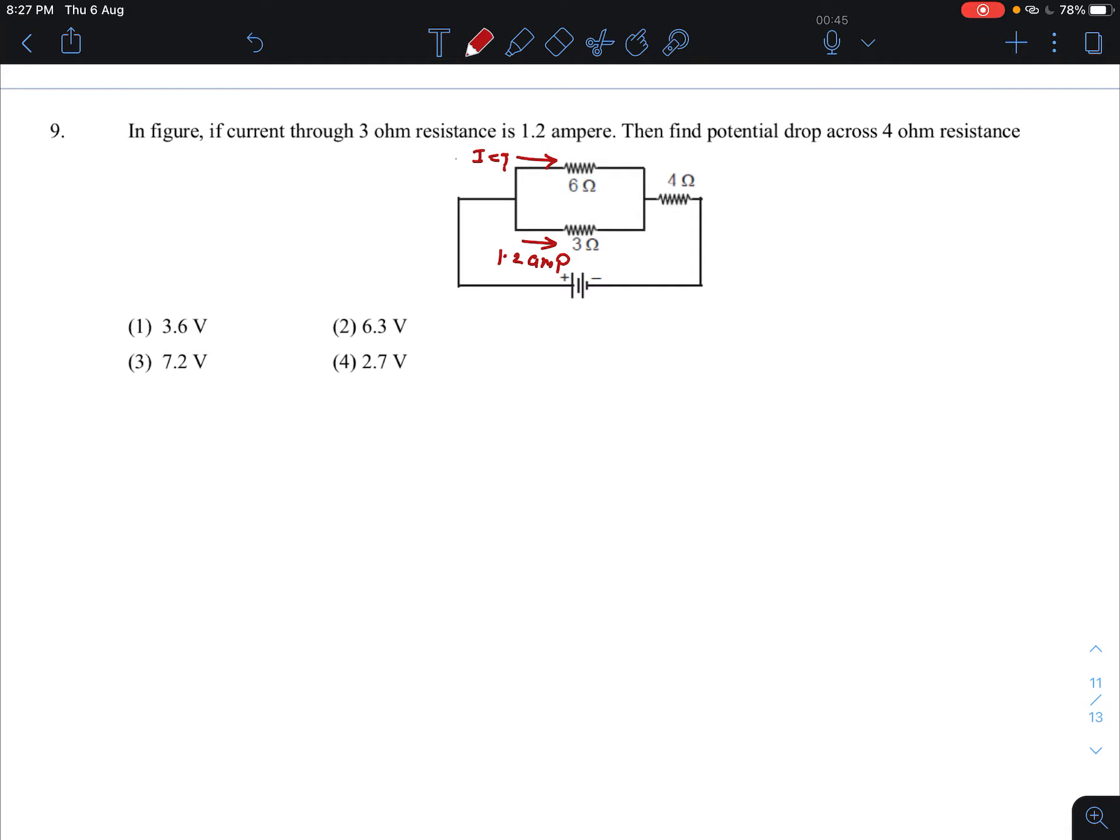How do we do this current? We can put a shortcut here. 3 ohm and 6 ohm are connected in series. V equals IR. Current equals V by R. In parallel, V is same, so current is inversely proportional to R.